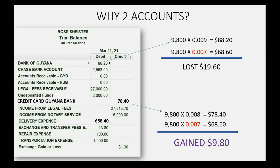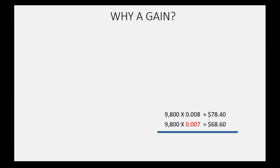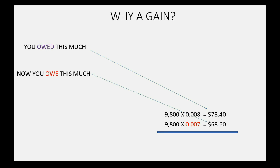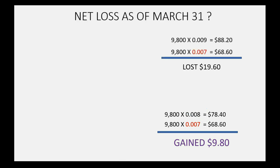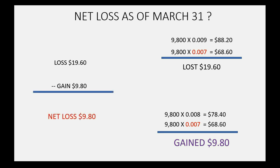You may ask: why is this a gain if the amount decreased? It's simple — you originally owed $78.40 US dollars on the day you charged, but on the day you pay, you only owe $68 US dollars because of the decrease in the exchange rate. So in the case of the credit card, you gained $9.80 even though your bank account lost $19.60. The net loss — the net home currency adjustment before recording payment — will be $9.80.